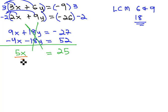Finally, to get the x alone, we'll divide both sides by 5, telling us that x is equal to 5.